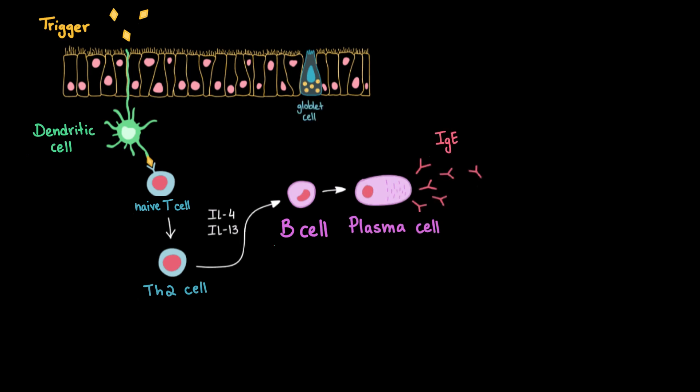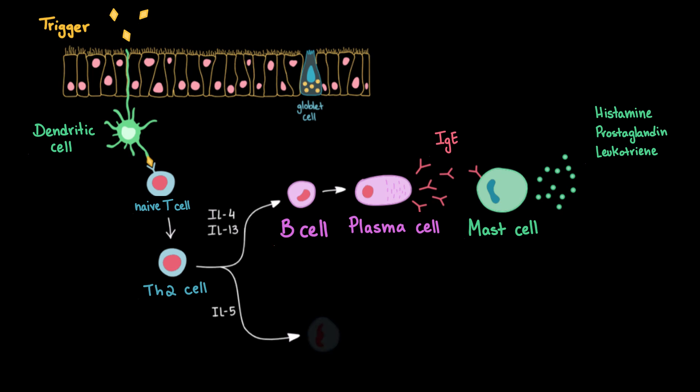These antibodies then attach to mast cells, leading to the release of several granules containing histamine, leukotrienes, and prostaglandins, which ultimately lead to inflammation. The T helper cells also release interleukin-5, which recruits and activates eosinophils. Once activated, these eosinophils release cytokines and additional inflammatory mediators, amplifying the inflammation.